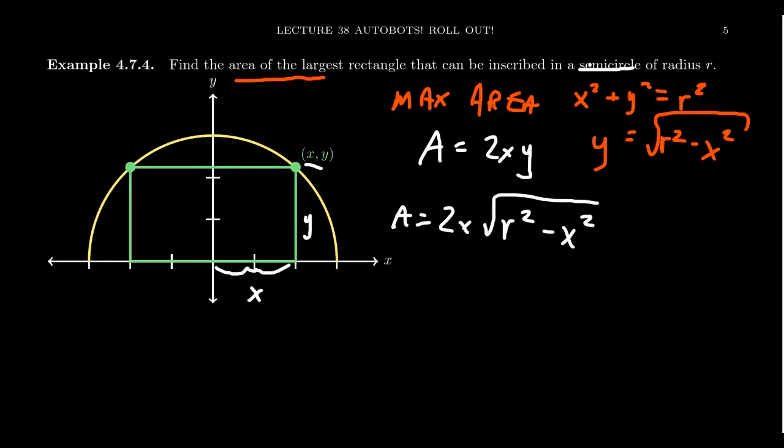I want to provide an alternative approach that one could take. Now, this one actually utilizes a little trigonometry. What if we, instead of using x and y, think of the angle θ formed between the x-axis and this point, which is a vertex of the rectangle?